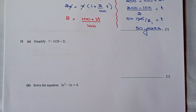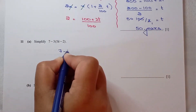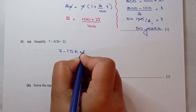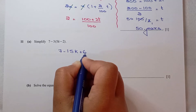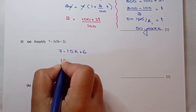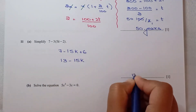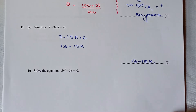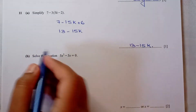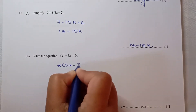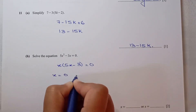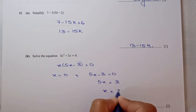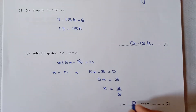Question number 11, part A: simplify the expression. 7 minus 3 times 5 gives minus 15k, and 3 times minus 2 gives minus 6, so 7 plus 6 equals 13. The answer is 13 minus 15k. For part B, solving the quadratic equation by taking x common: x times (5x minus 3) equals 0. So x equals 0 or 5x minus 3 equals 0, giving x equals 3/5.